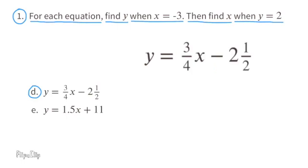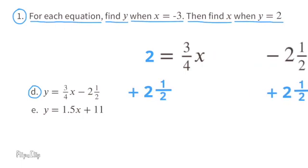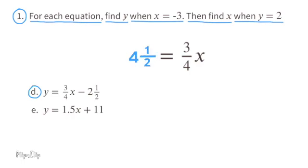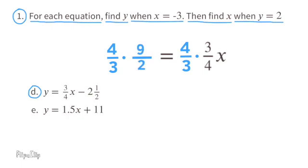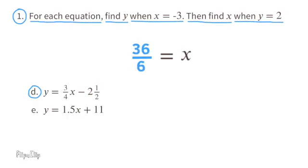Now substitute y with 2: 2 equals 3 fourths x minus 2 and a half. Add 2 and a half to both sides: 2 plus 2 and a half equals 4 and a half. So 4 and a half equals 3 fourths x. Multiply by the reciprocal 4 thirds: 4 thirds times 3 fourths equals 1, and 4 thirds times 9 halves equals 36 over 6, which is 6. So x equals 6 when y equals 2.